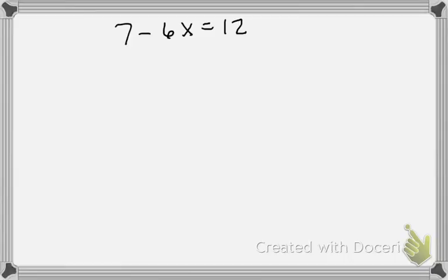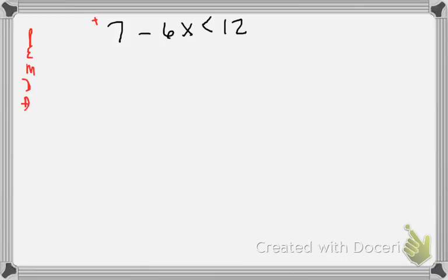Here's the same type of problem we had before but with an inequality instead of an equal sign — we're using a less than symbol. Make sure you understand what is positive and what's negative: always take the sign in front of the number. This seven is positive. If I remove the seven, it's really negative six X. My variable is being multiplied by negative six and it's being added by seven.